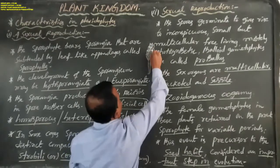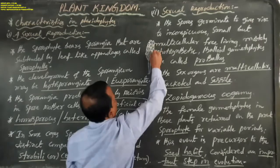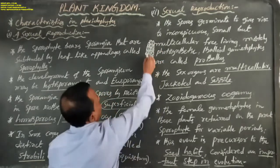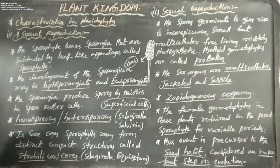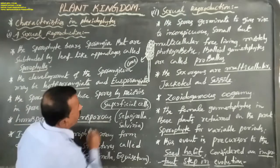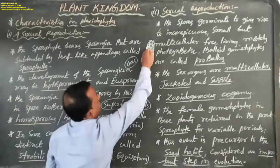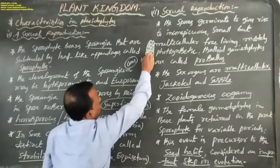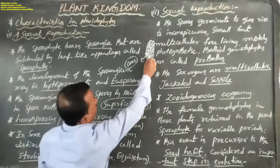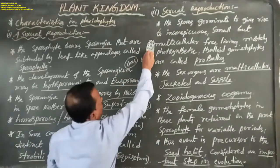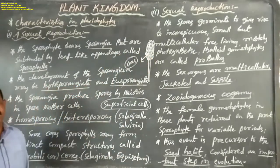When sporophylls are closely packed together, that structure is known as cones or strobili. Strobili or cones are seen in Selaginella and Equisetum. In general, the asexual stage in pteridophytes is the sporophyte, but in Selaginella and Equisetum the sporophylls form distinct compact structures called strobili or cones.